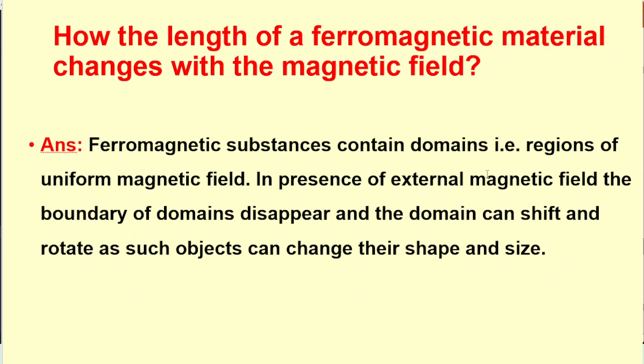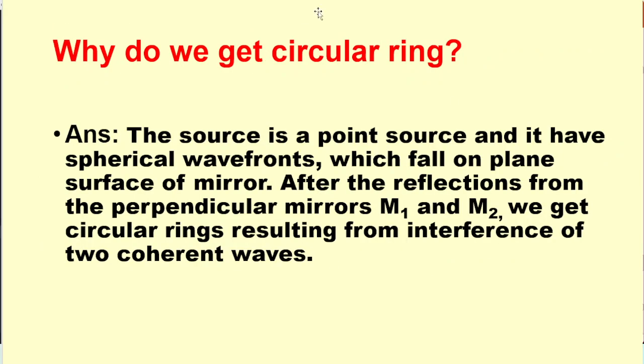How does the length of a ferromagnetic material change with the magnetic field? Ferromagnetic substances contain domains which are regions of uniform magnetic field. In presence of external magnetic field, the boundary of domains disappear and the domains can shift and rotate. As such, objects can change their shape and size.